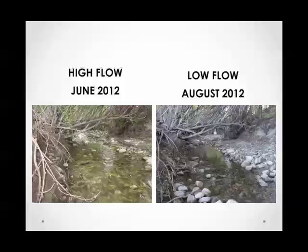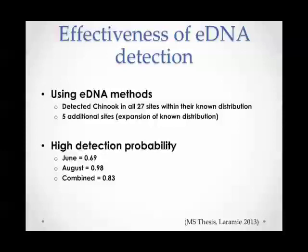Using eDNA, we were able to detect Chinook in all of the places where we expected to, based on the known distribution. We also detected Chinook in five additional sites, representing a possible expansion of their known distribution. We also had high detection probabilities throughout — during high flows in June, we had a 0.69 detection probability, and as flows were reduced in August, we had 0.98, for a combined probability of 0.83.